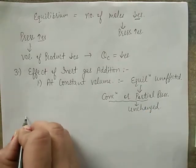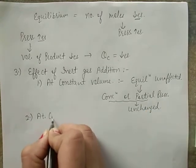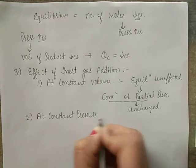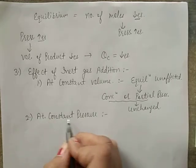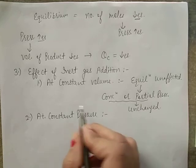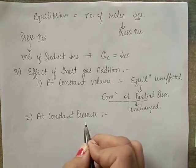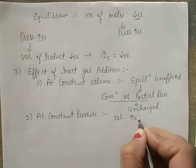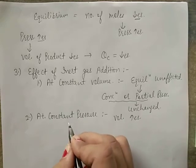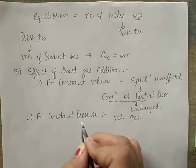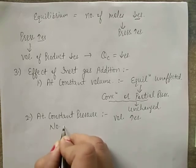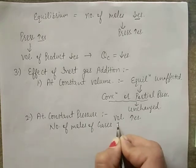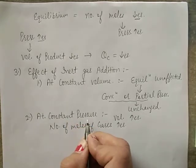But at constant pressure, if inert gas is added, the volume of the process increases, and the equilibrium will shift in the direction where there is an increase in the number of moles of gases, because that increases the volume at constant pressure.